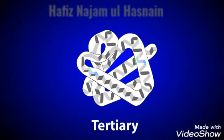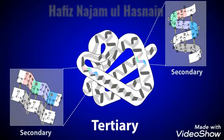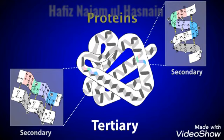This level of structure is created when the secondary structure folds and twists upon itself. The tertiary structure is held in place by a variety of bonds and interactions that form between the R groups of the amino acids in the chain. Once polypeptides have formed a tertiary structure, they are commonly referred to as proteins.